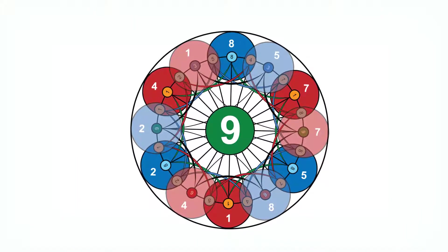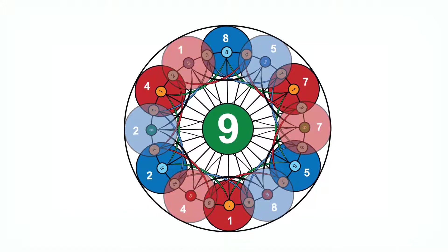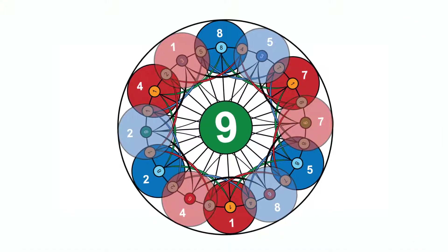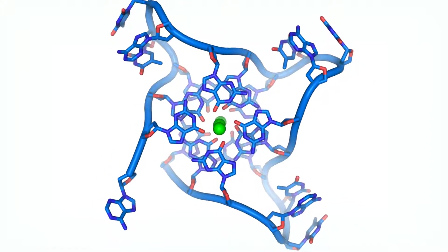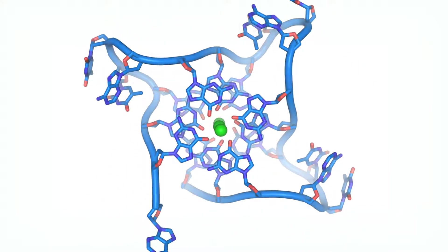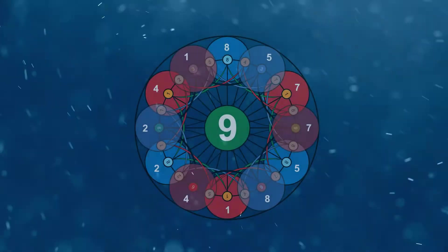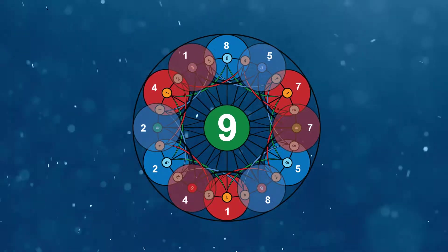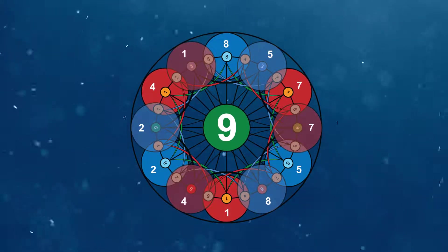And then you have this Fibonacci spiral that's representing growth and continuous growth, which is in a spiral sequence just like our DNA is in a spiral sequence.